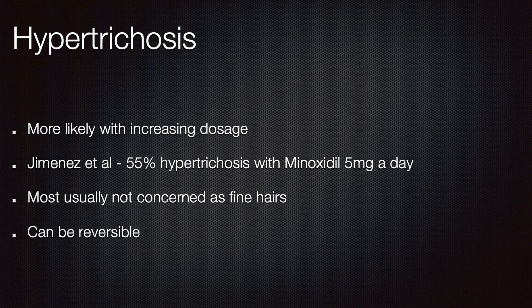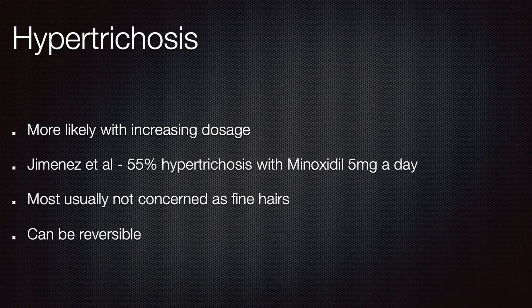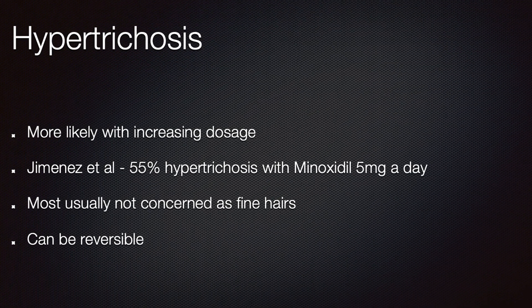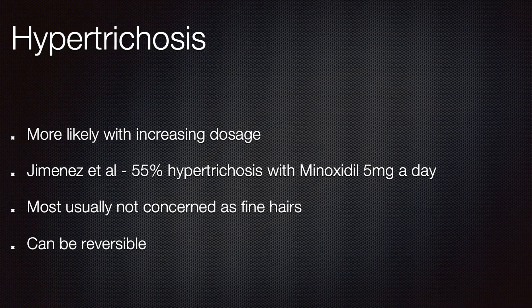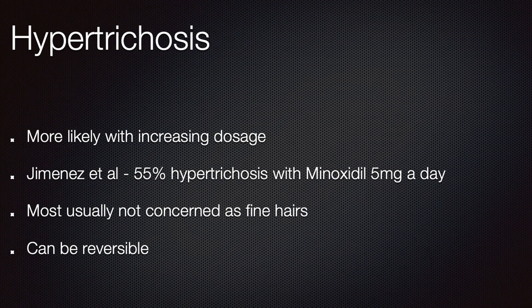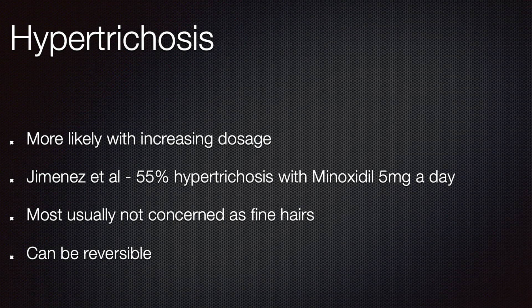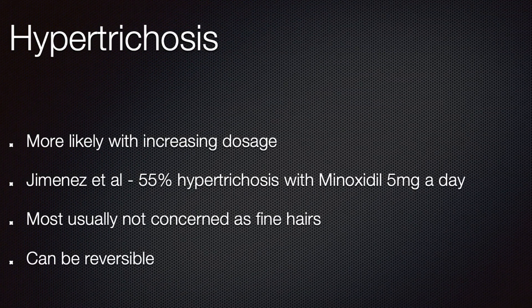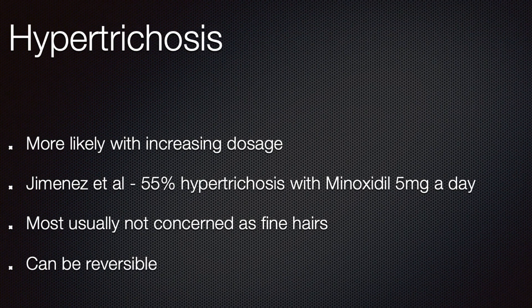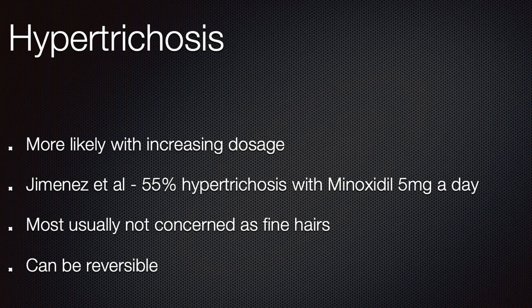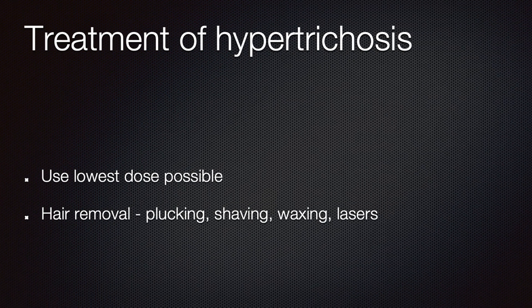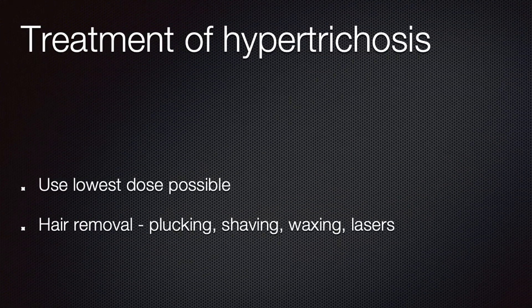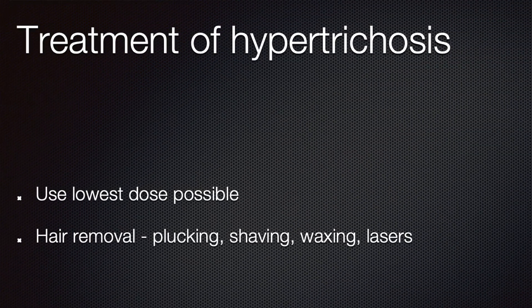As dosage increases, hypertrichosis increases — every milligram increases it by about 17%, so at 5 milligrams about 40 to 55% of patients will have hypertrichosis, as shown in Jimenez's largest series. However, below 4 milligrams in men and below about 2 milligrams in women, hypertrichosis seems quite minimal. Patients are usually not too concerned because these are fine hairs and it is reversible — if you stop minoxidil all these vellus hairs fall off. Simple hair removal methods like plucking, shaving, waxing or lasers can also be used.